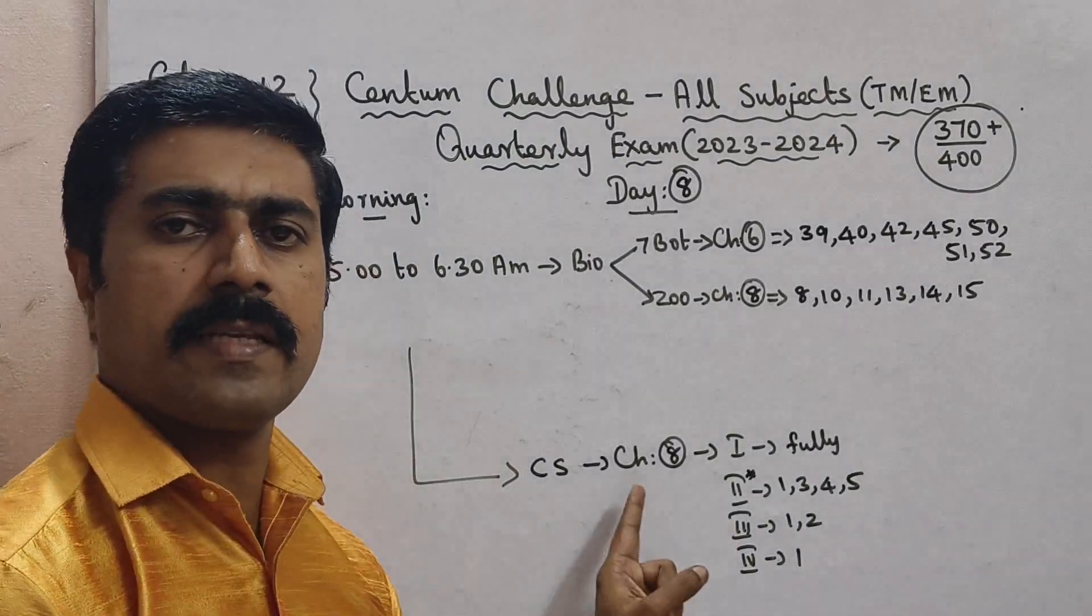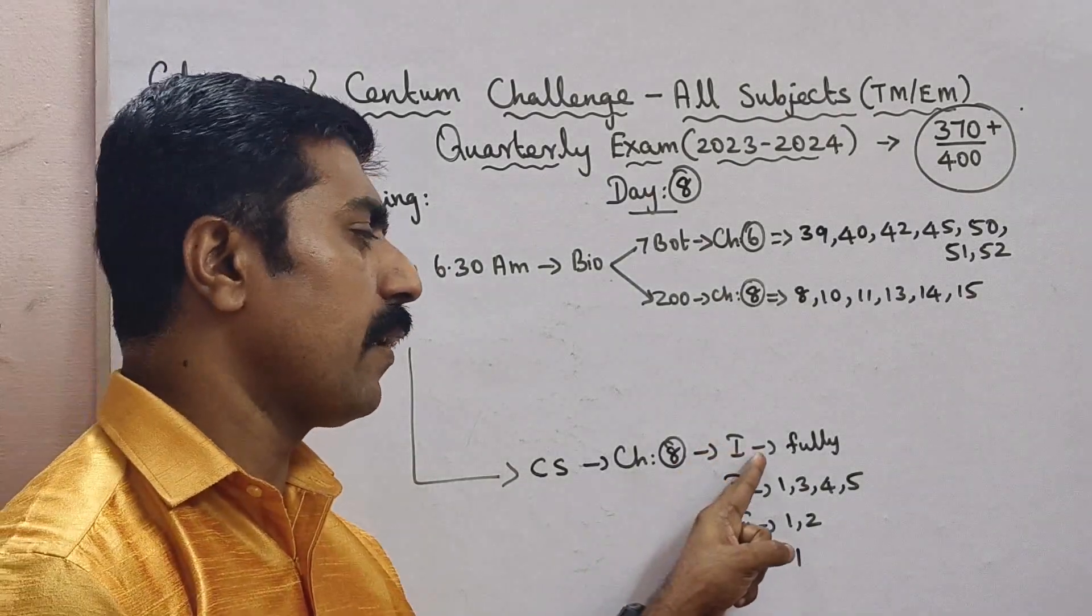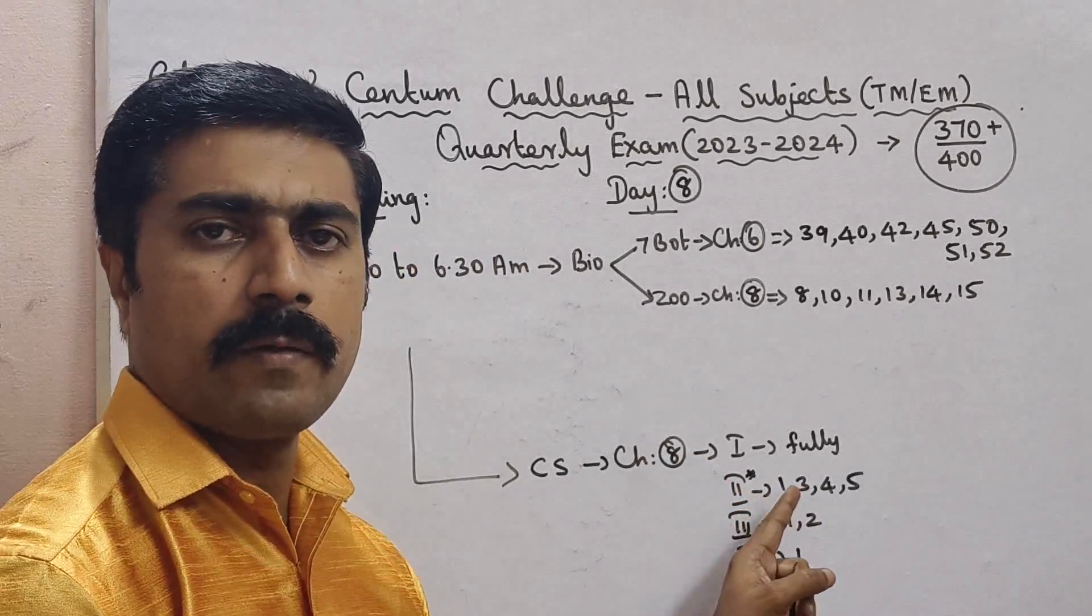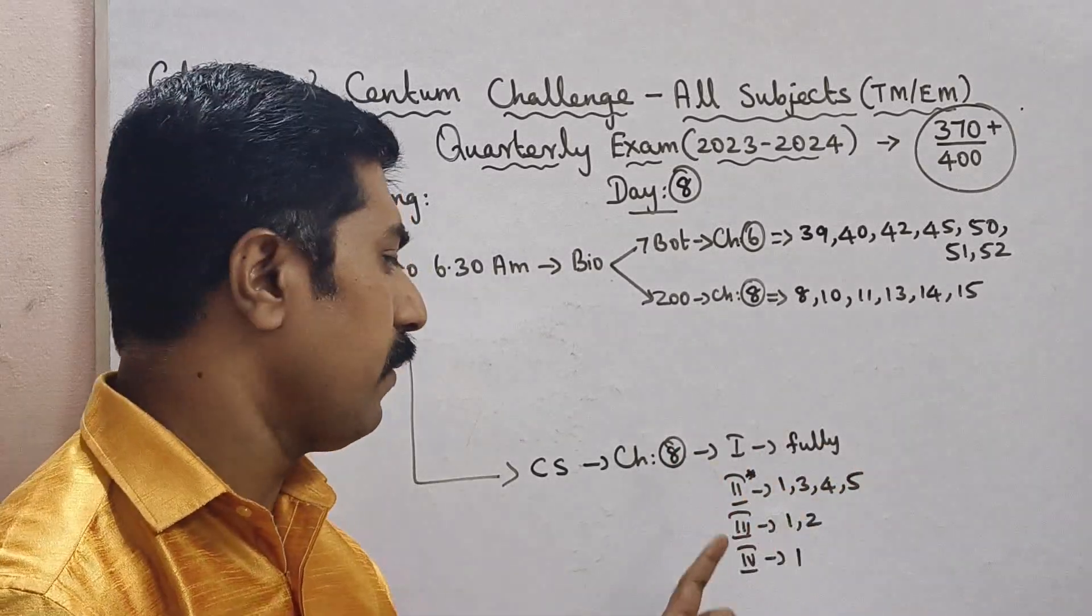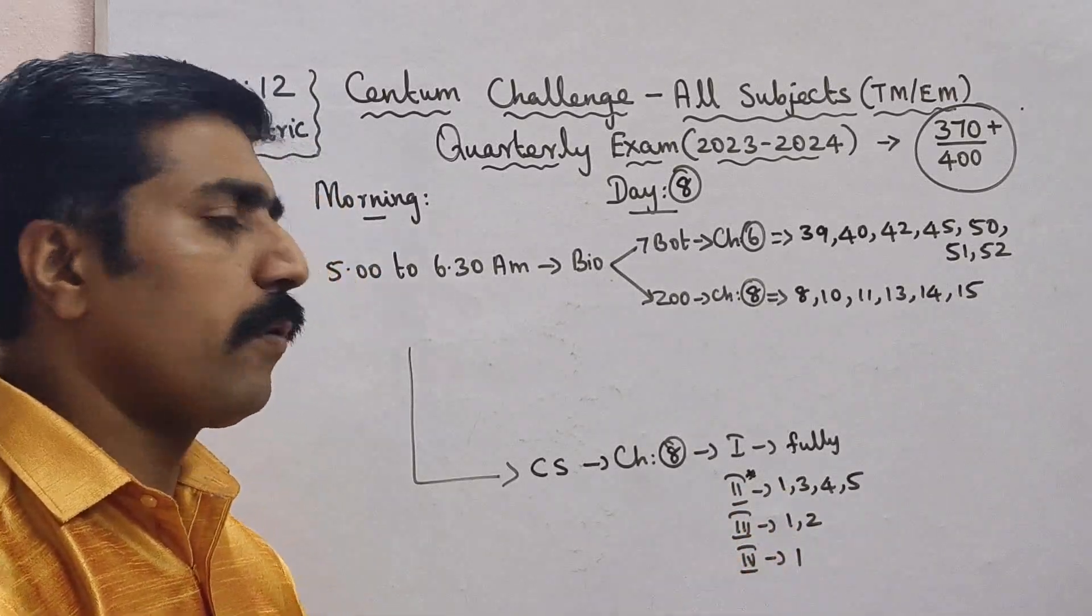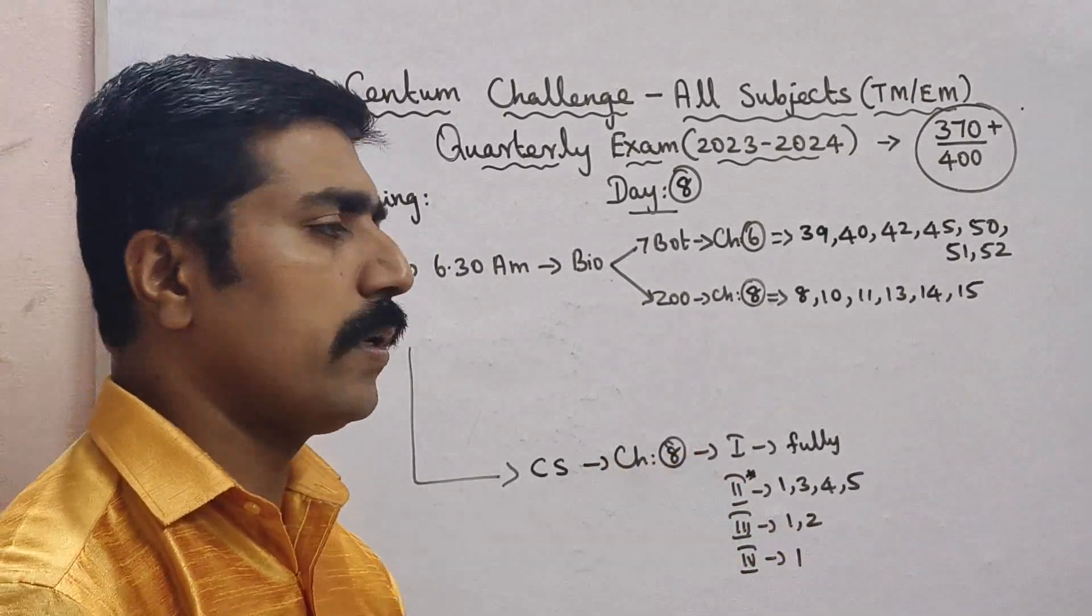Computer science students chapter 8 book back: Roman numeral 1 one mark questions, Roman numeral 2 questions 1, 3, 4, 5, Roman numeral 3 questions 1 and 2, Roman numeral 4 question number 1. This is Day 8 schedule.